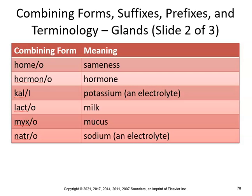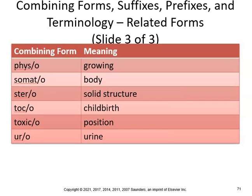Kal refers to potassium, so you can have hyperkalemia (high levels) or hypokalemia (low levels). Myx means mucus — myxedema is a condition of mucus-like swelling of the face. Natr is sodium — hyponatremia is a blood condition of deficiency of sodium, and hypernatremia is excessive sodium. Phys means growing — hypophysectomy is removal of the pituitary gland. Somato means body — somatotropin is a hormone secreted by the anterior lobe of the pituitary gland that stimulates growth. Stero means solid structure — a steroid is an organic carbon compound with a ring structure, including bile acids and vitamin D.